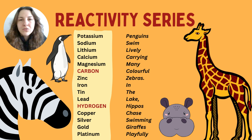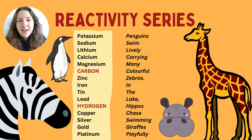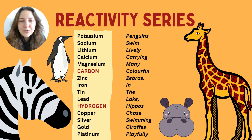The reactivity series is also used for metal extraction, which is a really useful process when we want to obtain more precious or useful metals that may be difficult to obtain otherwise. One thing students find tricky is remembering the order — you don't get given this in the exam. A helpful mnemonic is: Penguins Swim Lively Carrying Many Colorful Zebras In The Lake, Hippos Chase Swimming Giraffes Playfully.